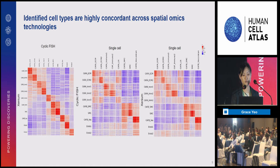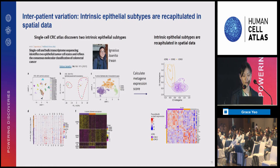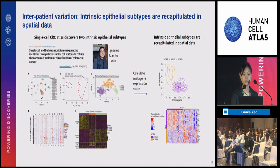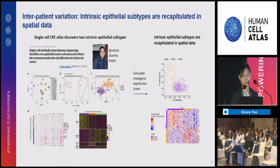We can look at the correlation of aggregated profiles across spatial technologies and with single cell, and we see a really nice correlation between the spatial technologies as well as single cell. This is a surprisingly good result, because we do have a limited panel with spatial data, concentrating only a few hundred genes. When we look at gene signatures associated with the two intrinsic epithelial subtypes and project our spatial data onto them, we can cleanly separate the ICMS2 and ICMS3 patients, and they express the expected markers.